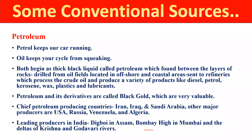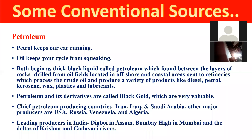The chief petroleum-producing countries in the world are Iran, Iraq, and Saudi Arabia as the major areas, along with USA, Russia, Venezuela, and Algeria. In India, the major petroleum fields are Digboi in Assam, Bombay High in Mumbai and the Arabian Sea, and the delta of the Krishna and Godavari rivers — these are the most important oil and petroleum fields in India.